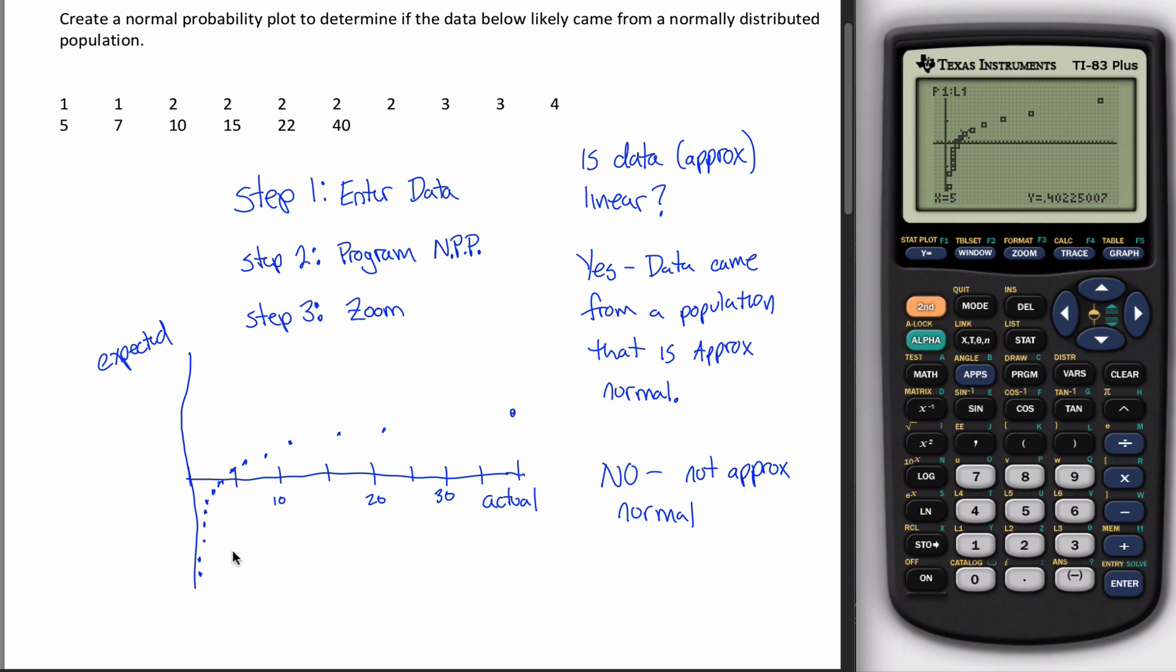So the idea with the normal probability plot is you just look at your dots, and if they fall in a straight line, you can conclude that the data came from a population that's approximately normal.